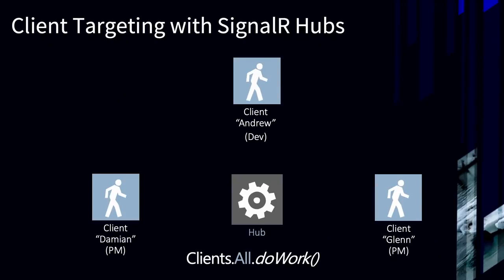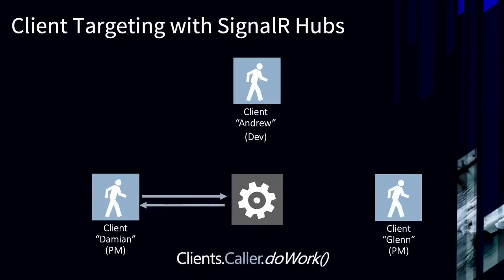The idea behind that is we have this thing in SignalR called a hub. A hub literally lives on the server side — you've got all the spokes, all the clients, and then the hub kind of lives in the center. A client sends a message into that hub, and then I'm going to say clients.all.doWork — invoke a method on the hub — and that goes to all the connected clients. You can also target an individual client: if Damian sends a message in, we did clients.caller, that's only going to call back to him.